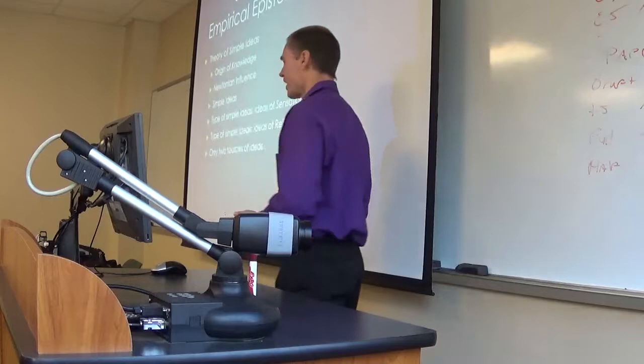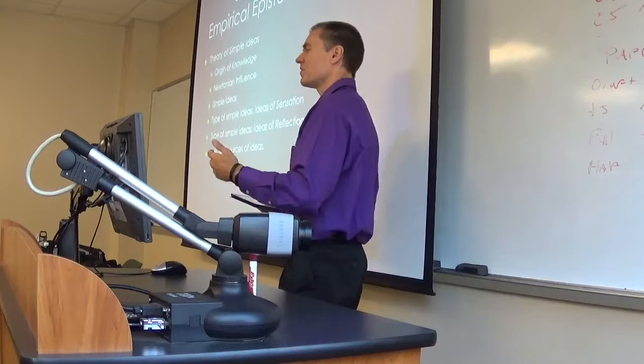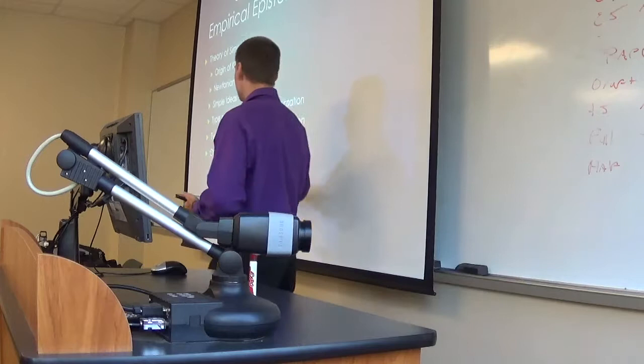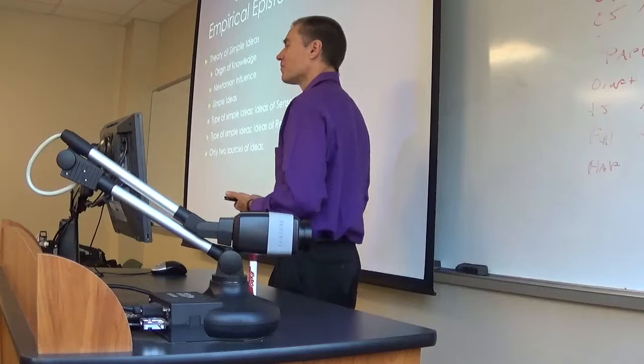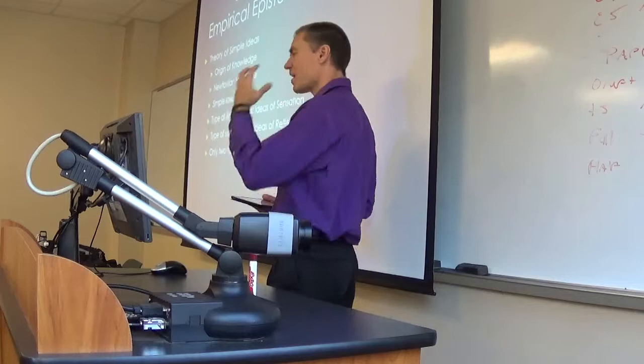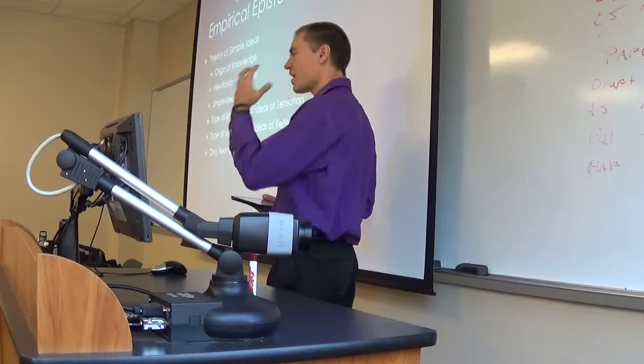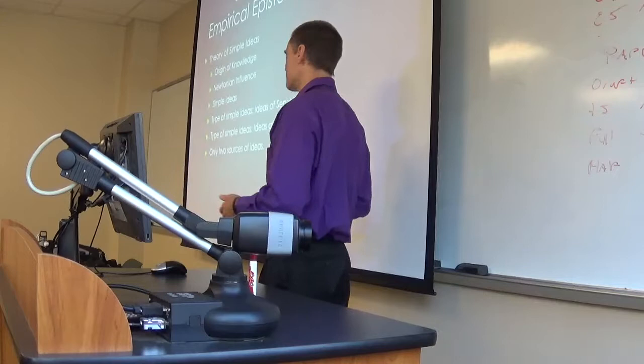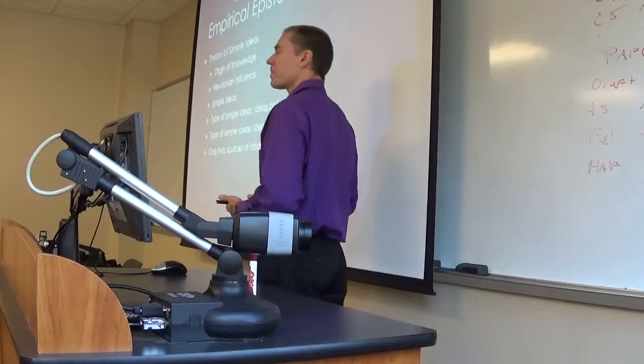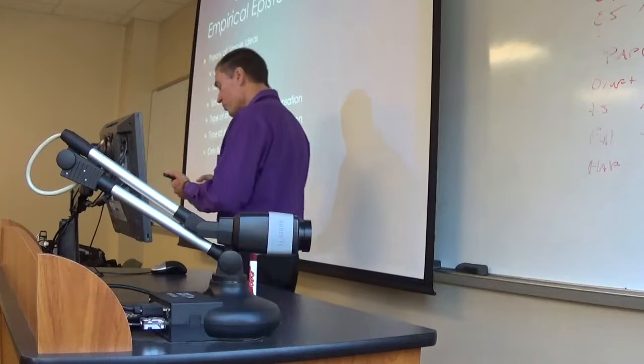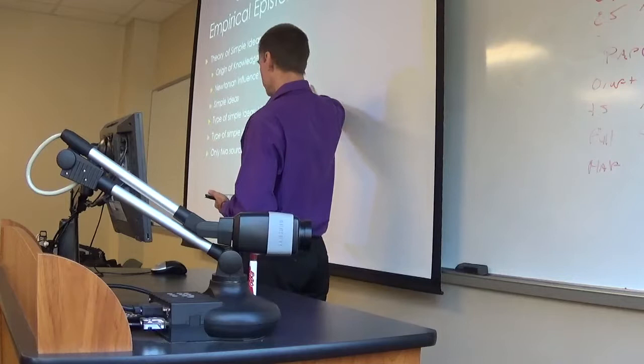The second type of simple ideas Locke calls ideas of reflection. The mind does stuff — it thinks, it feels, it reflects, it has emotions. We can somehow observe the operations of the mind itself. So we have what's coming from the outside through experience, and then we have observing the mind's operations — like feeling hungry, or feeling sadness or happiness. We get these ideas of how the mind works: from the senses and from reflection. He claims those are the only two options.